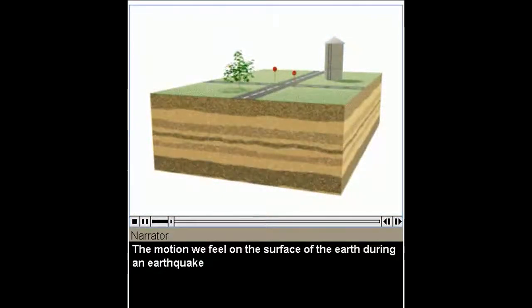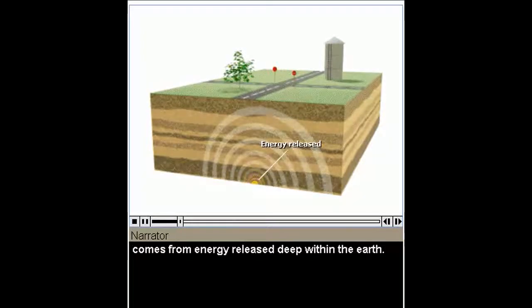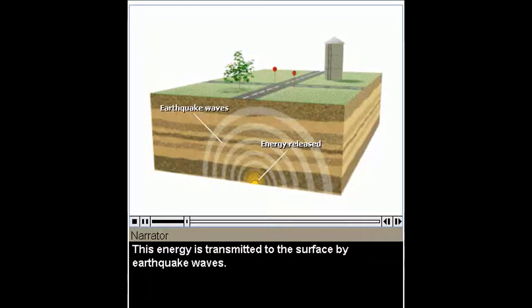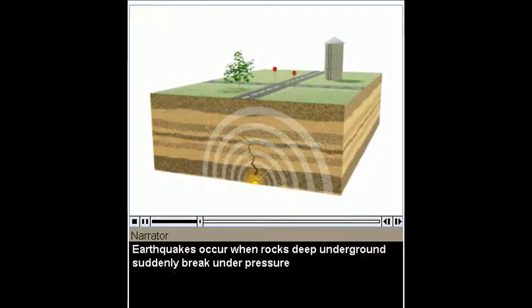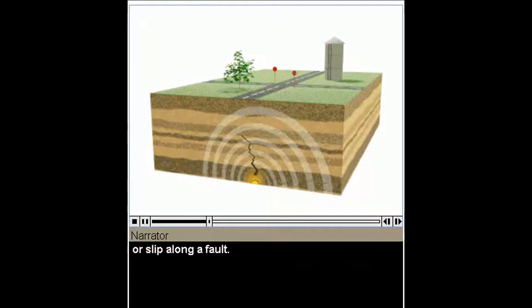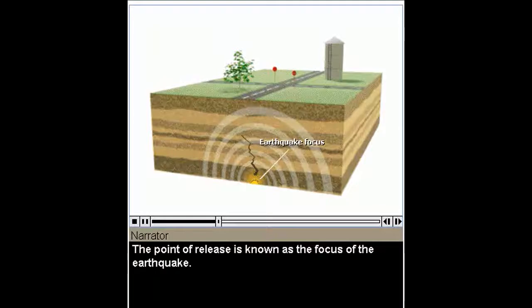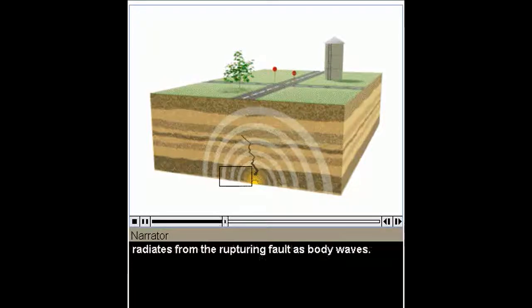The motion we feel on the surface of the Earth during an earthquake comes from energy released deep within the Earth. This energy is transmitted to the surface by earthquake waves. The study of earthquakes and earthquake waves is called seismology. Earthquakes occur when rocks deep underground suddenly break under pressure or slip along a fault. The point of release is known as the focus of the earthquake. The energy released by the earthquake radiates from the rupturing fault as body waves.